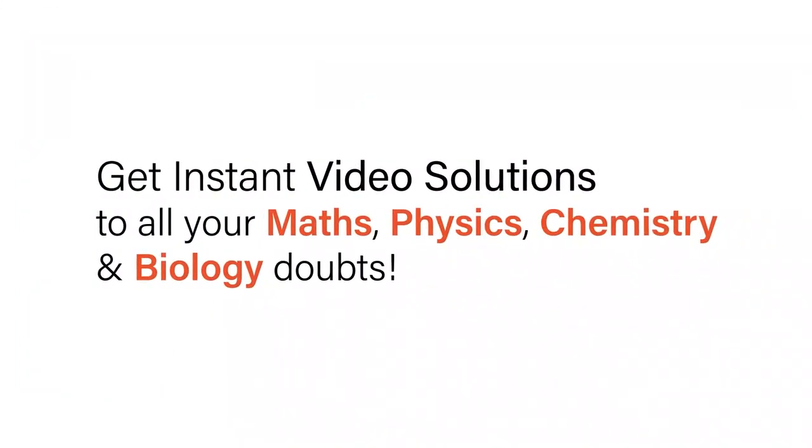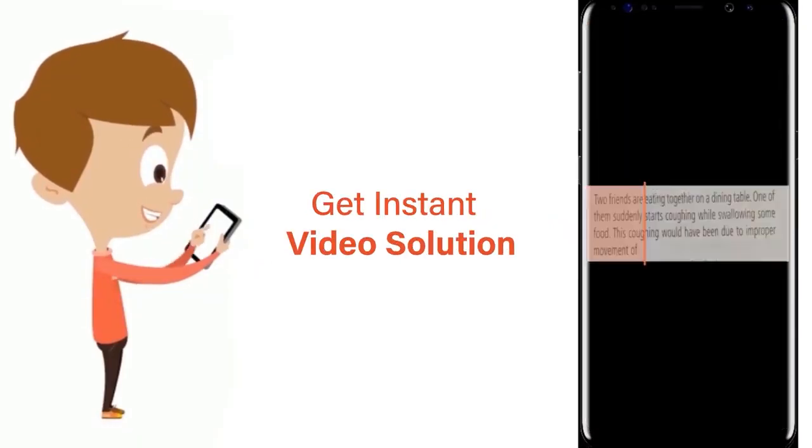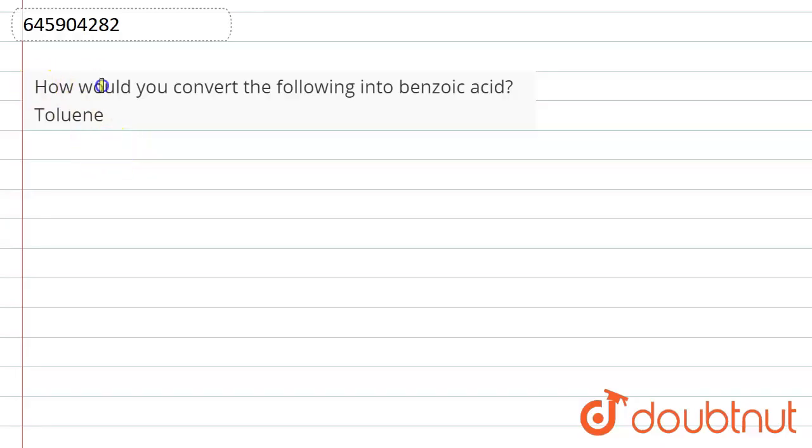With Doubtnut, get instant video solutions to all your maths, physics, chemistry, and biology doubts. Just click the image of the question, crop the question, and get instant video solution. Download Doubtnut app today. Hello students, the question is how could you convert the following into benzoic acid?